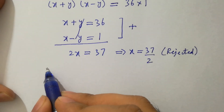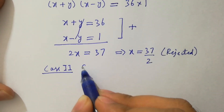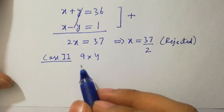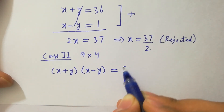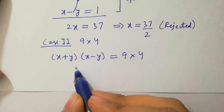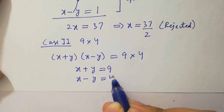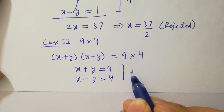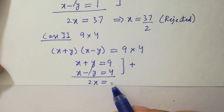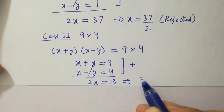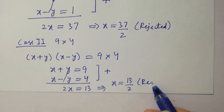Now take case 2: 9 times 4. Here x plus y equals 9 and x minus y equals 4. Adding them: 2x equals 9 plus 4, which is 13. So x equals 13 over 2, which is a fraction, not a natural number. Case 2 is also rejected.